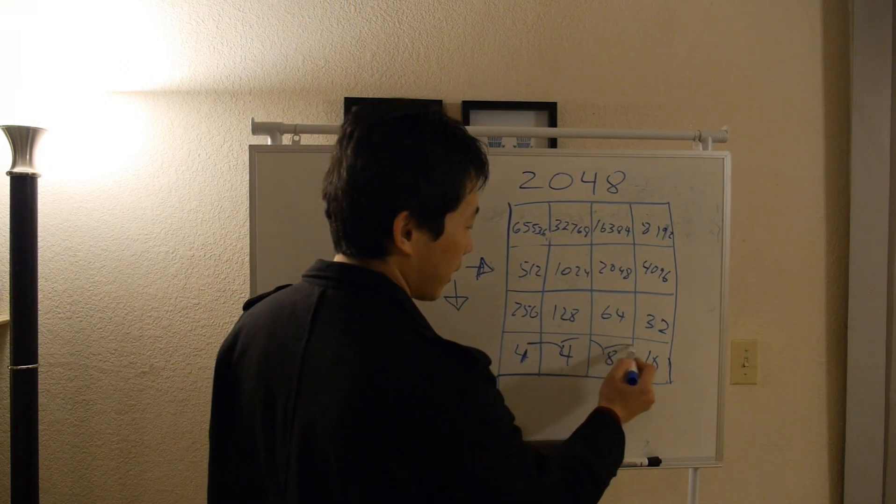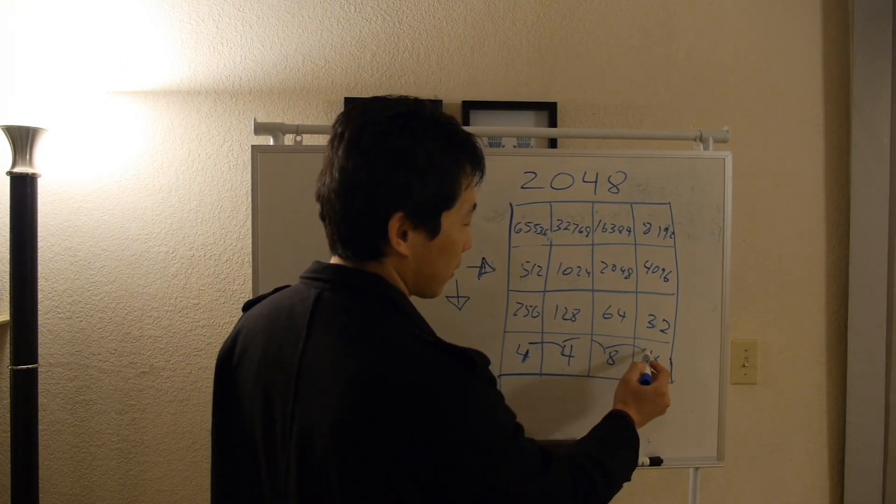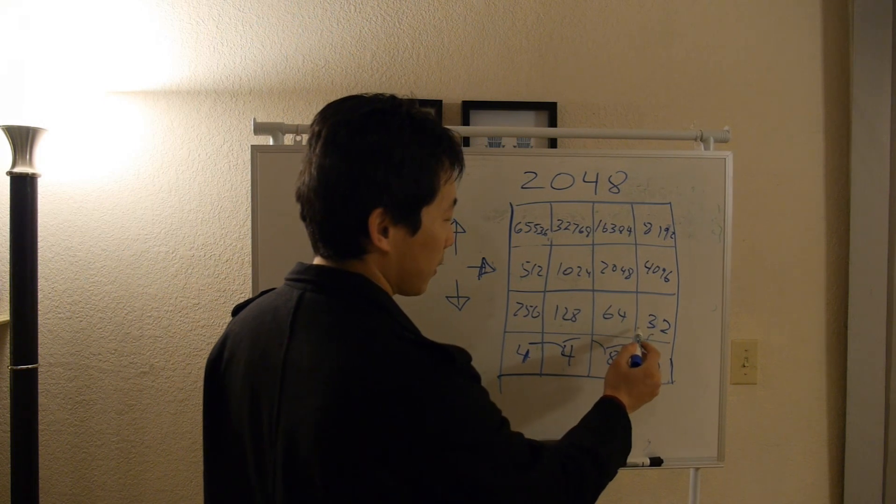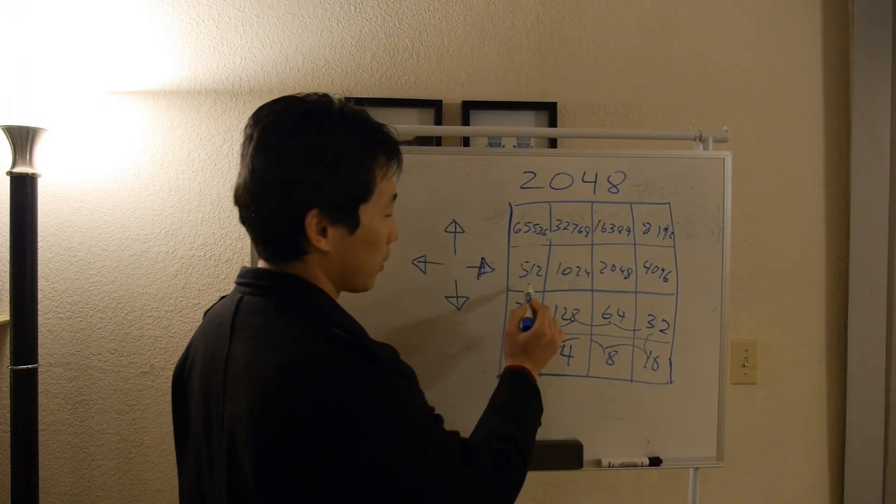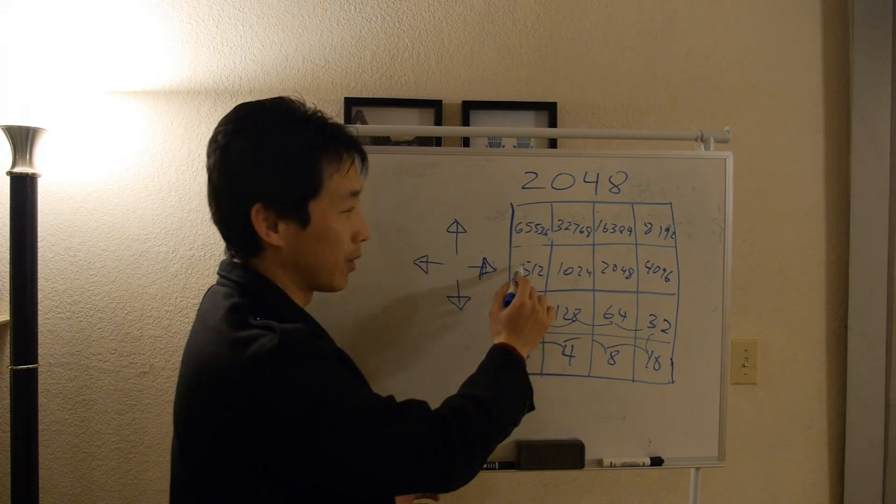Here, here, and then it goes to 64, this one to 128, 256, 512. 512 needs to be right next to the other one.